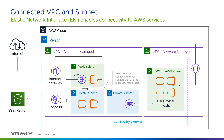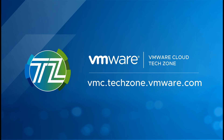Now you have a good understanding of the AWS global infrastructure, including regions, AZs, and subnets. In the next segment, we'll show how to specifically prepare your AWS resources for a new VMware Cloud on AWS deployment. Be sure to visit VMware Cloud Tech Zone for the latest VMware Cloud on AWS resources.